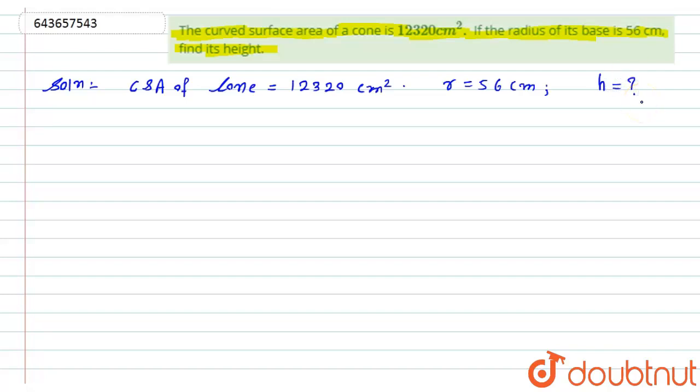Now, as you know, the curved surface area of the cone is given by the formula that is pi r l. So here I simply put the values.